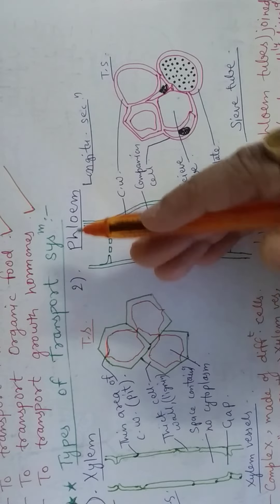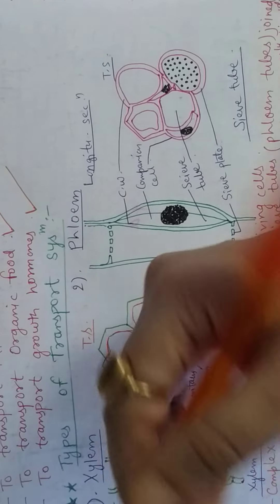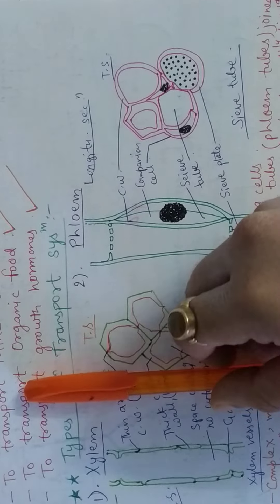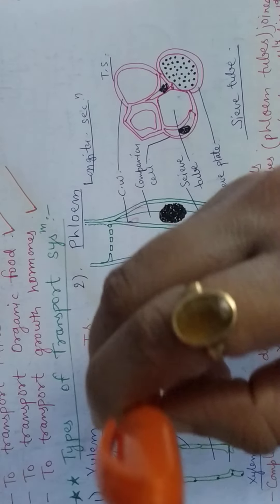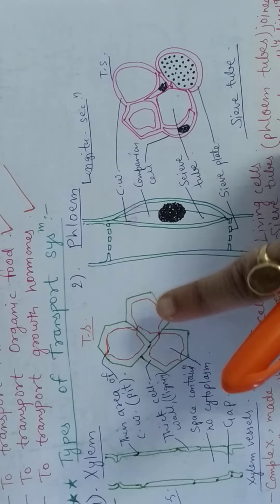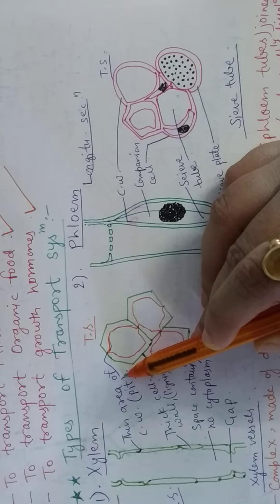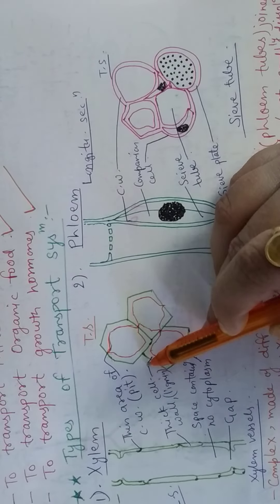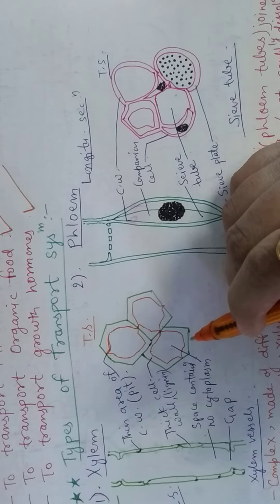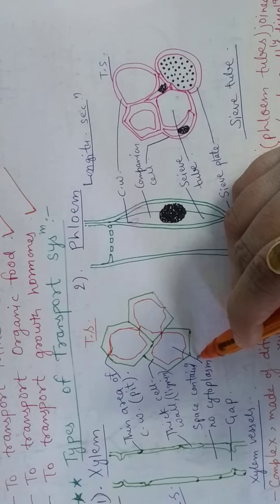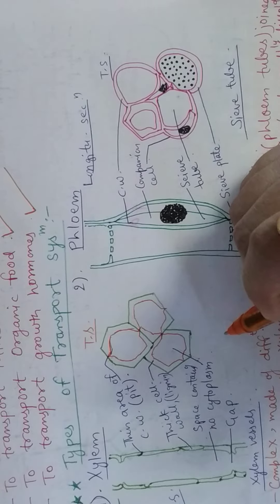If we cut it in the transverse section, this is the structure. But if we see it like this, it will show: this is the pit, this one is made up of lignin which is a thick cell wall, and this is a space containing no cytoplasm. It is known as gap.